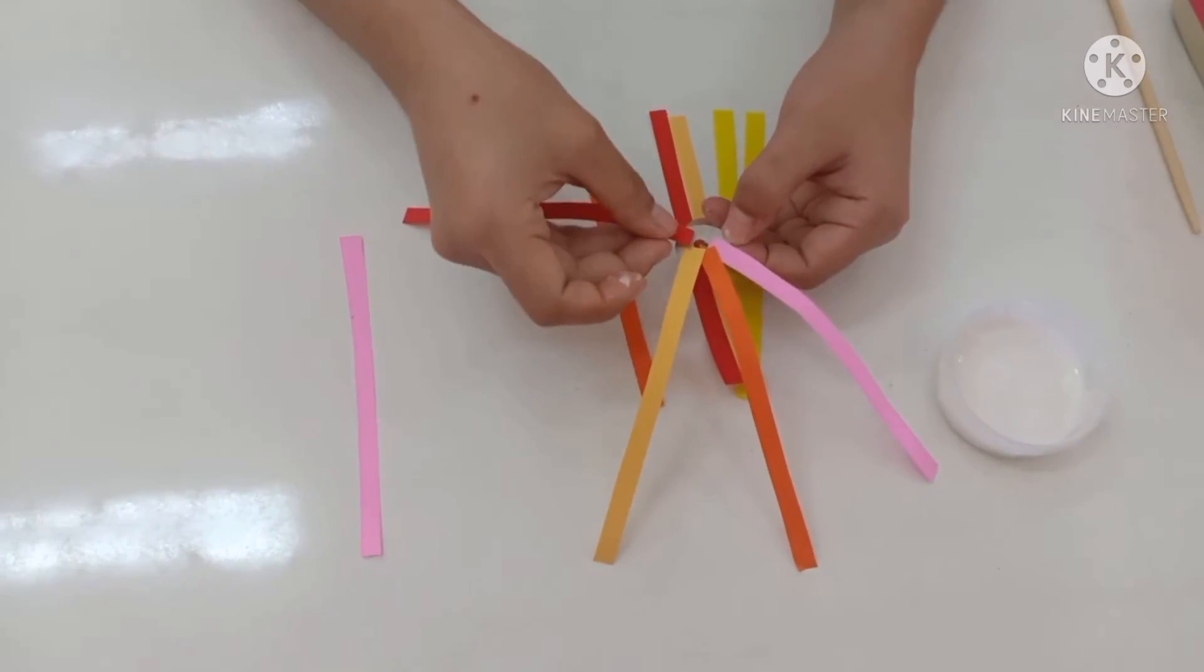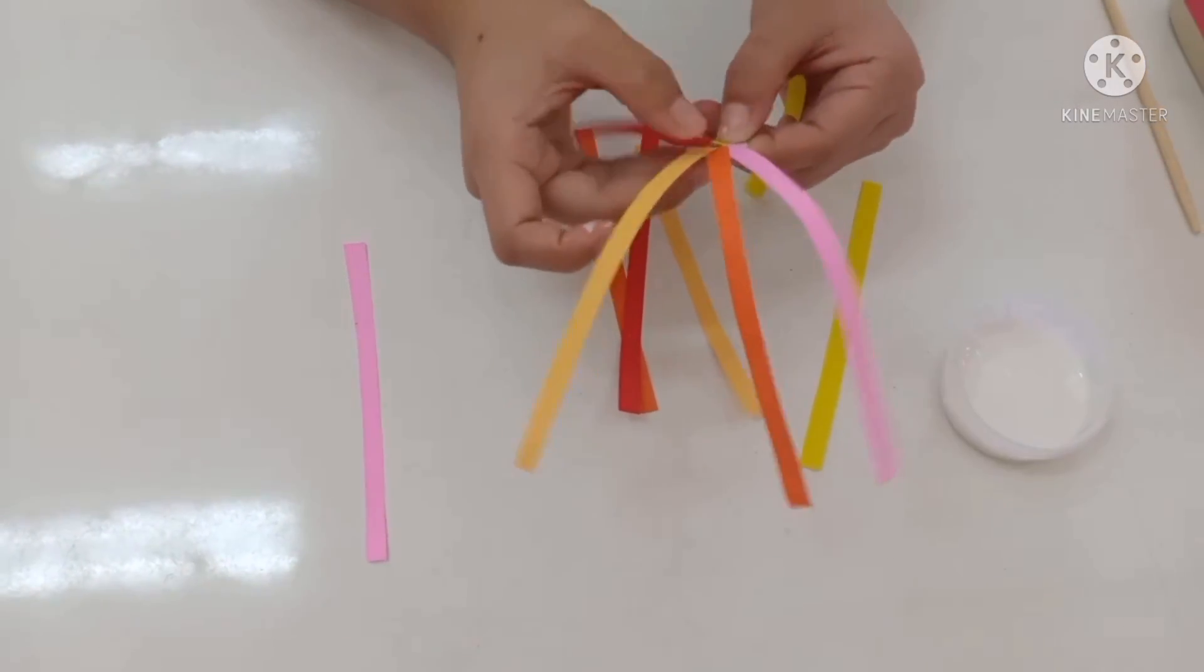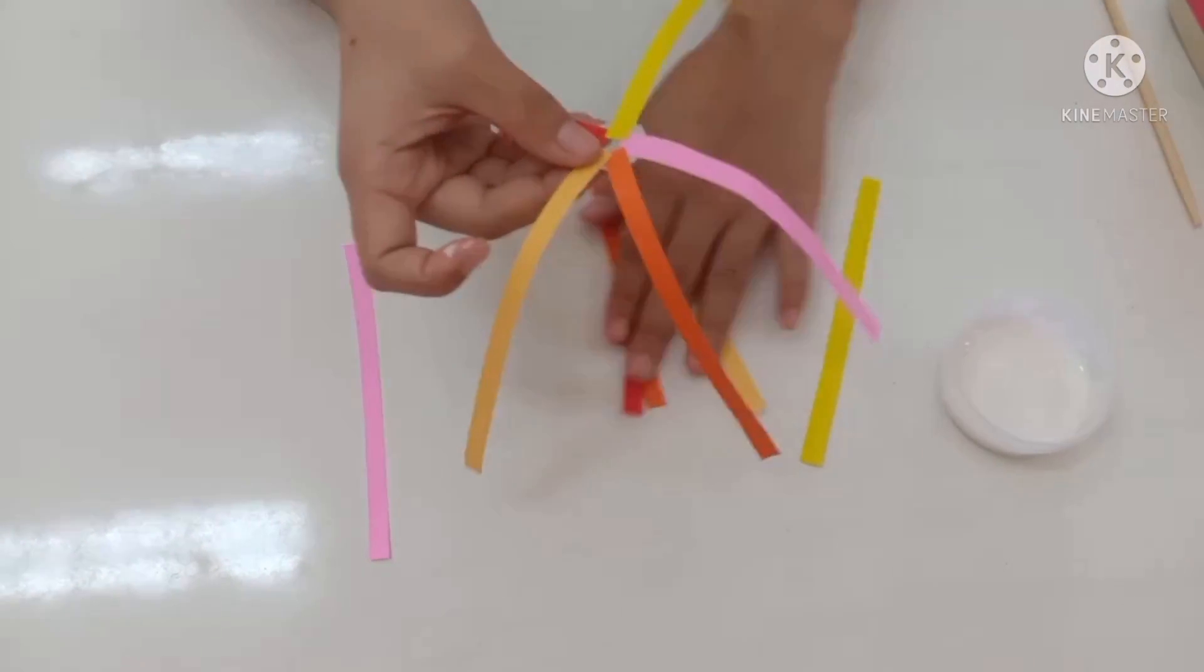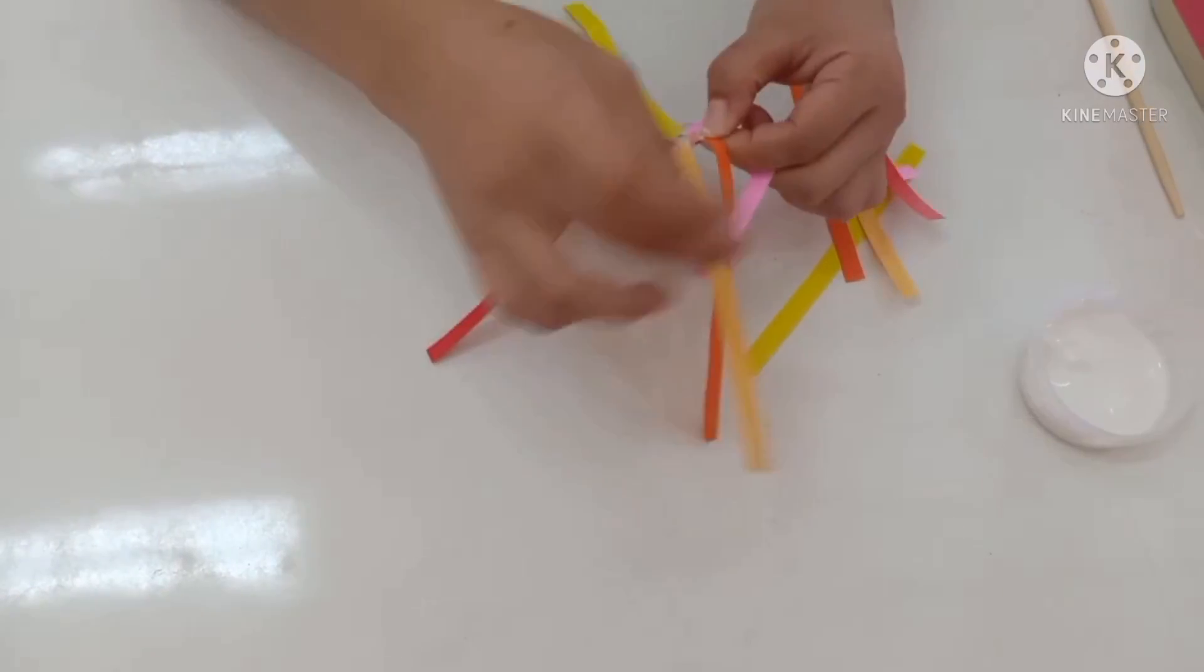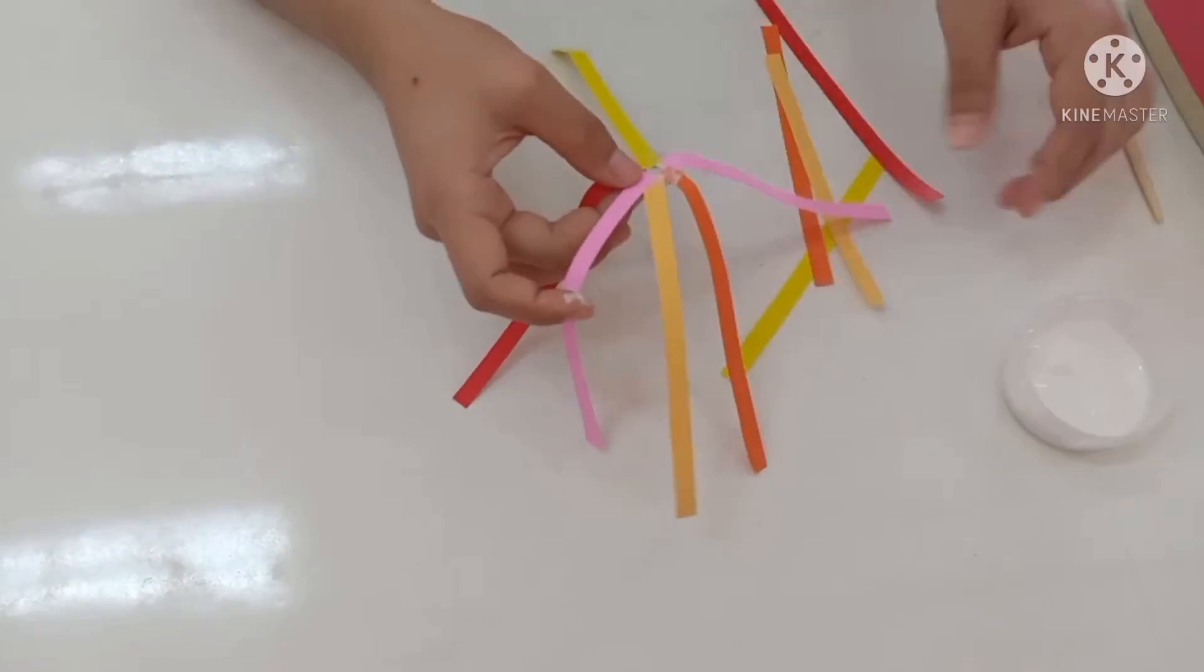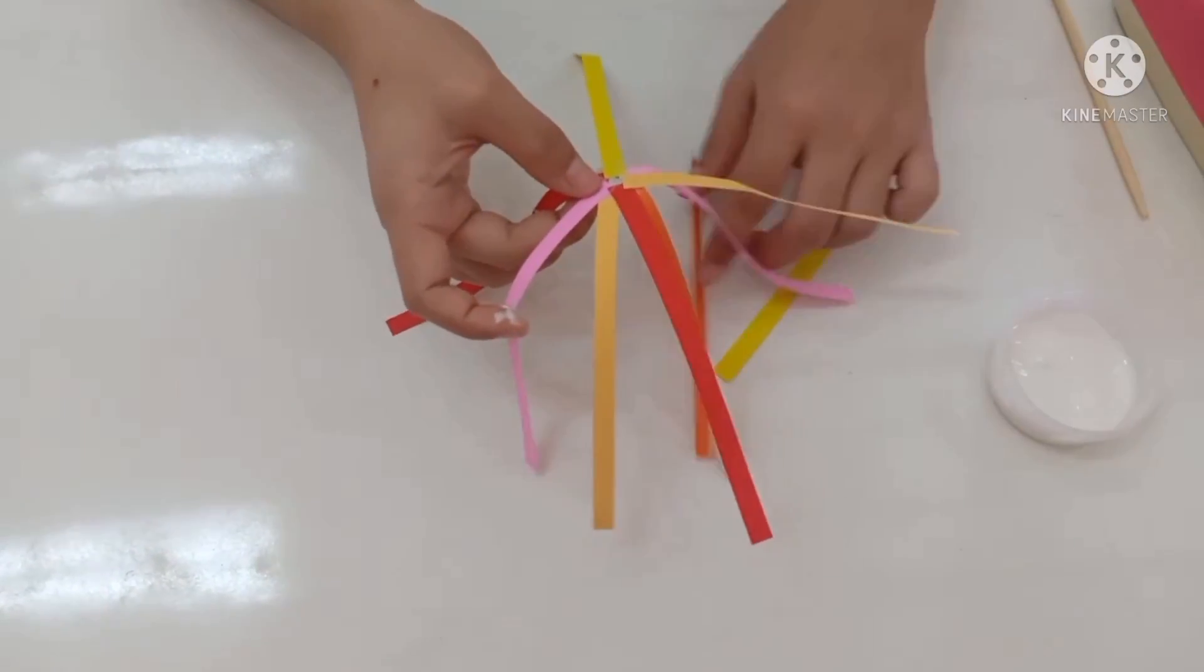When we're done, we can start gluing the strips all around the circle. We can put about five or six all the way around. Now, after we put them around, we're going to put some more in between or on top.